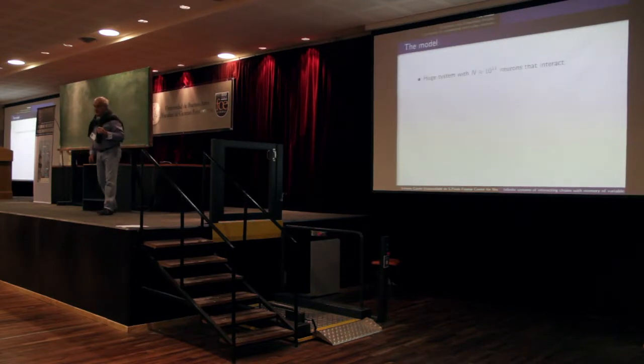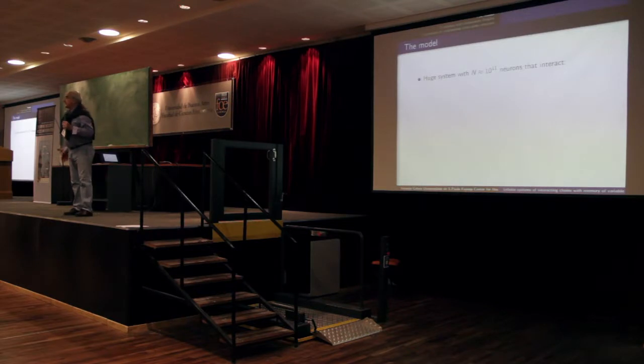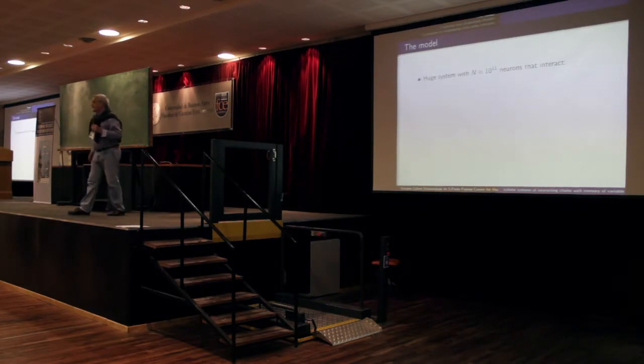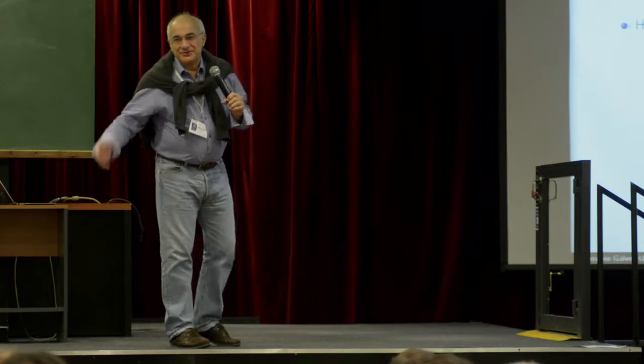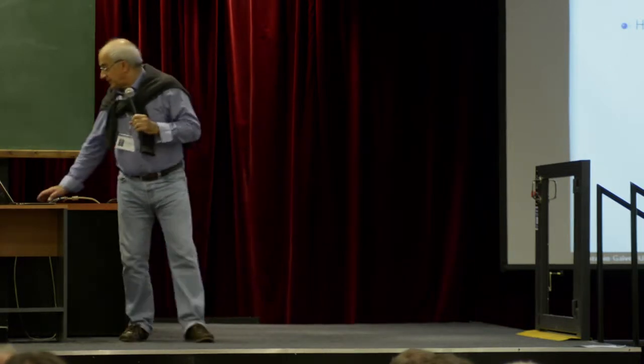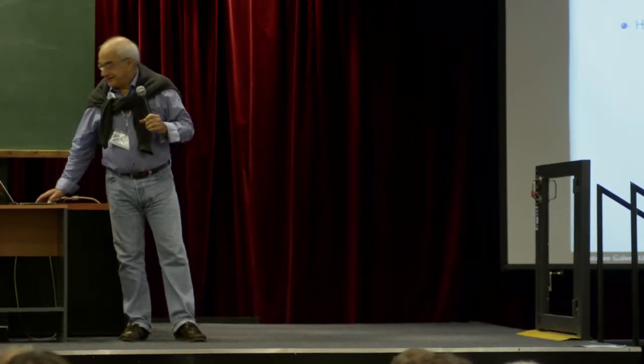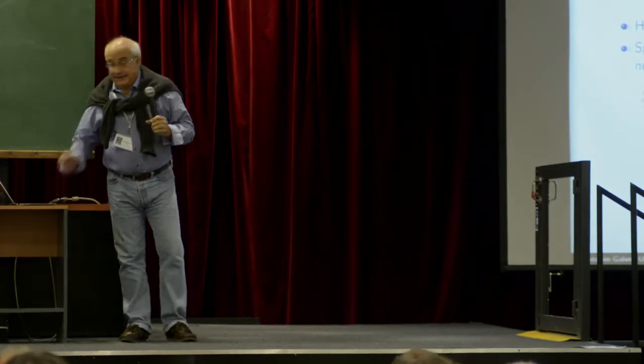Now we have around 10 to the power 11 neurons. So you could say it's an infinite set of neurons, because 10 to the power 11 is infinite. In practical terms, finite is 10, 20, 30. After 1000 it's no longer finite. And this is 10 to the power 11.